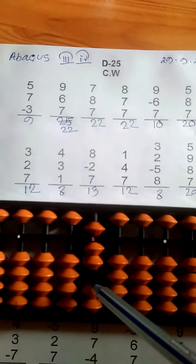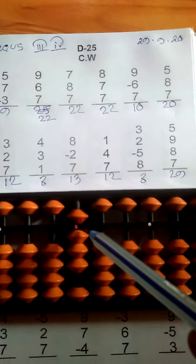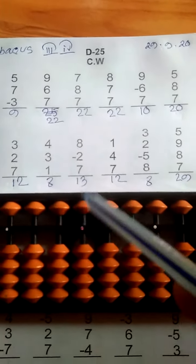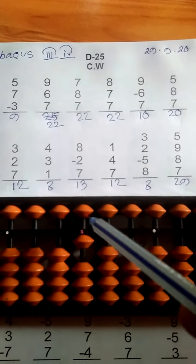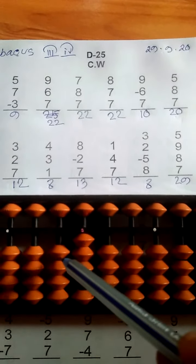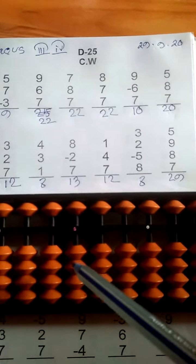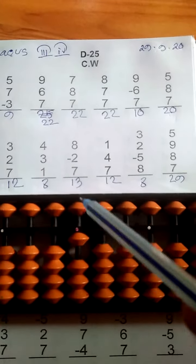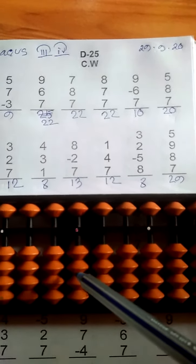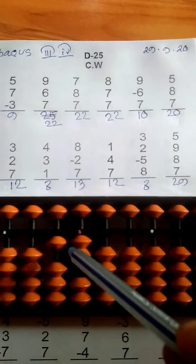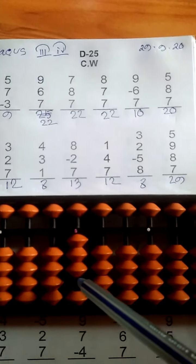4, 3, 1. Answer is 8. 8, list 2, add 7. Answer is 13. 1, 4, add 7. Answer is 12. 3.